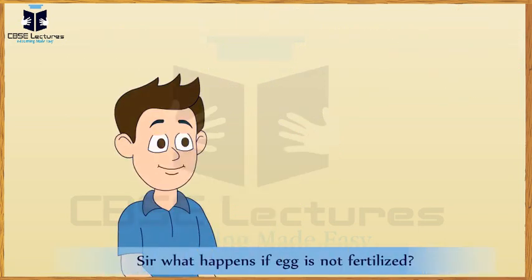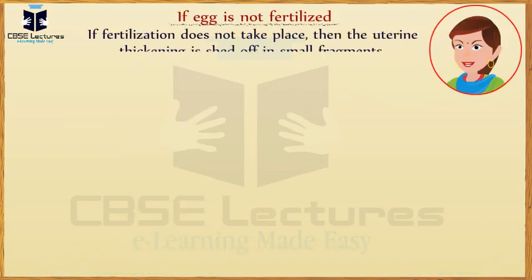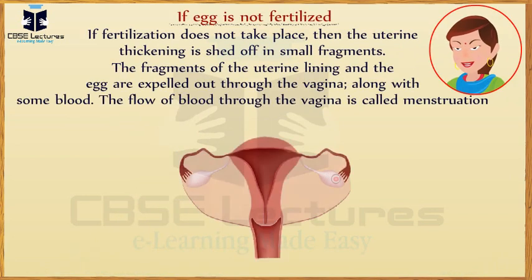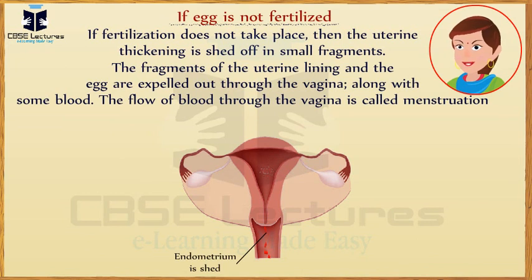What happens if the egg is not fertilized? If fertilization does not take place, then the uterine thickening is shed off in small fragments. The fragments of uterine lining and the egg are expelled out through the vagina along with some blood. The flow of blood through the vagina is called menstruation.